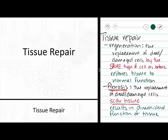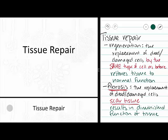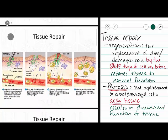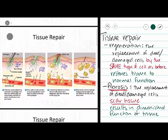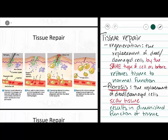Now that we understand the difference between regeneration and fibrosis, we are going to take a look at an example of tissue repair by looking at our skin. Please keep in mind that tissue repair occurs in other places besides your skin — we are just going to use our skin as an example.